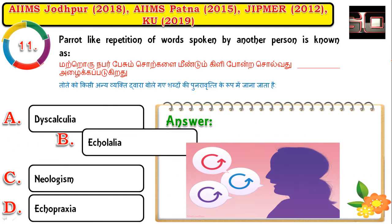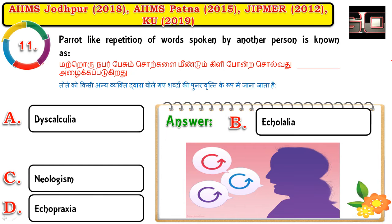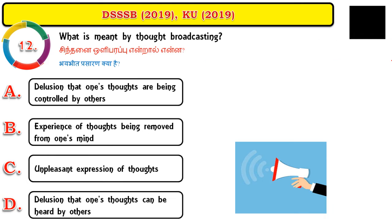Question number eleven: the correct answer is echolalia. Whatever you say to the patient, the same words are repeated by the client. For example, if you ask 'What is your name?' the client also repeats 'What is your name?' — whatever you say, the same information is repeated back as-is.